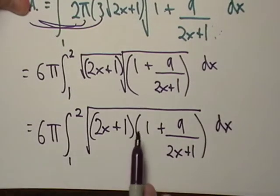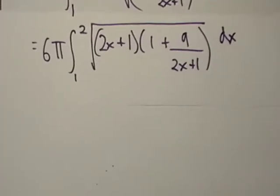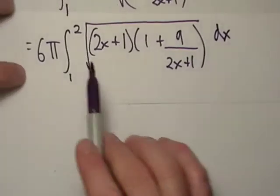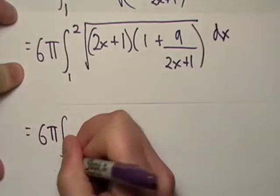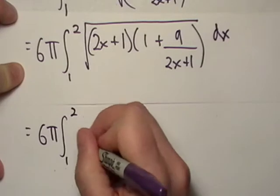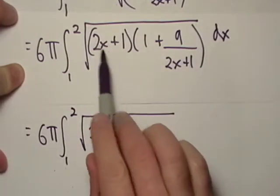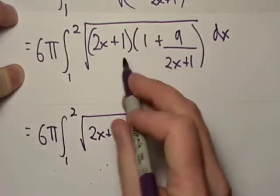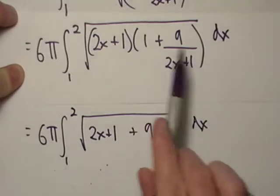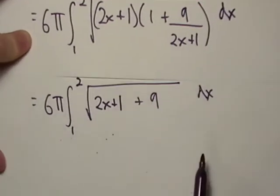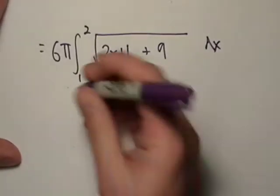What we're going to end up doing is distributing this. We're going to distribute this mess inside of here. We should get an answer that is similar to 2x+1. Look at that. When this distributes, it's just going to cancel out, isn't it? That's what we're going to do.